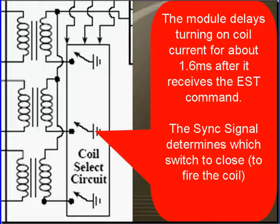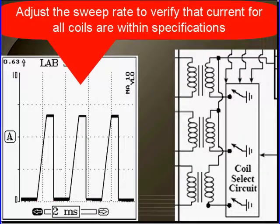The sync signal determines which switch to close, which coil to fire. Adjust the sweep rate to verify that current for all coils are within specifications. The pattern on the left shows us that all coils are drawing the same current.